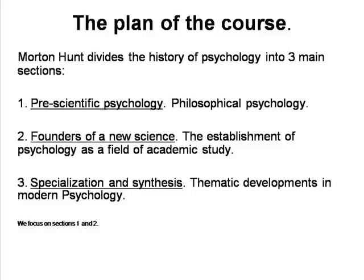Hunt divides his history into three sections. First, three chapters on philosophical psychology, then seven chapters on the beginnings of modern scientific psychology, and finally nine chapters on the developments of the various subfields of modern psychology. In this course, we will focus on the first two sections, and you can look at the various subfields in detail in the specialist courses which you choose for the minor.